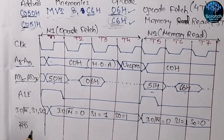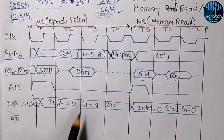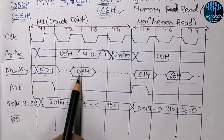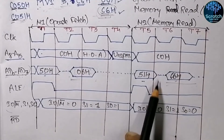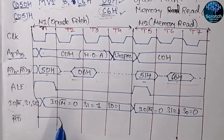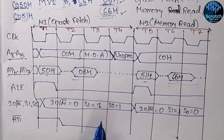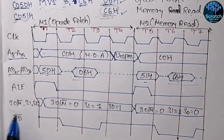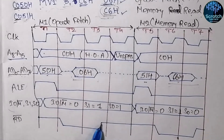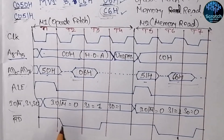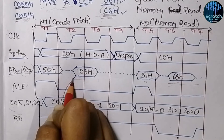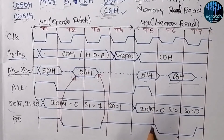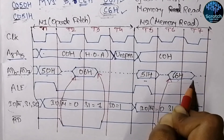The last signal is RD-bar. Data is to be read during T2 and T3 in the opcode fetch cycle (reading opcode 06H) and during T6 and T7 in the memory read cycle (reading data C6H). Since RD-bar is an active-low signal, it remains low during T2 and T3 and also during T6 and T7. When RD-bar goes low it means data is being read, so it stays low until the input data is taken, both for the opcode and for the operand.